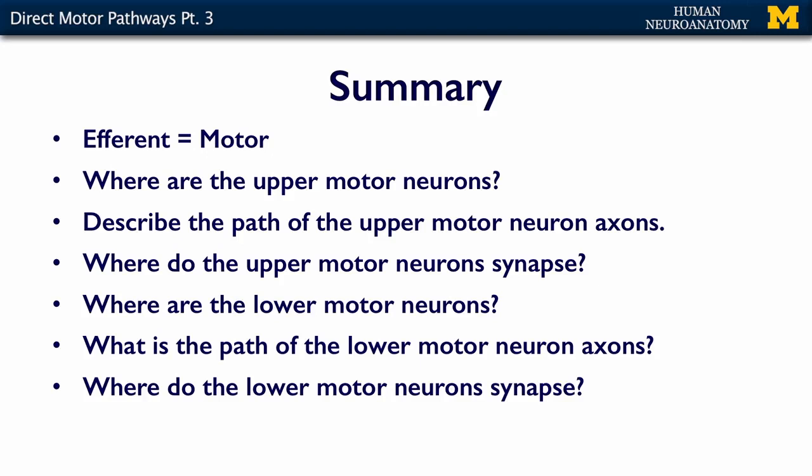In summary, I want you to remember that efferent equals motor. Know where your upper motor neurons are and be able to describe the path of the upper motor neuron axon all the way through the internal capsule, brain stem, and down to the spinal cord. Know where upper motor neurons synapse, what a lower motor neuron is, where lower motor neurons live, and what path their axons take to reach the muscle — including what we call the synapse with the muscle. If you know all of these things, you'll be ready for the assessment.